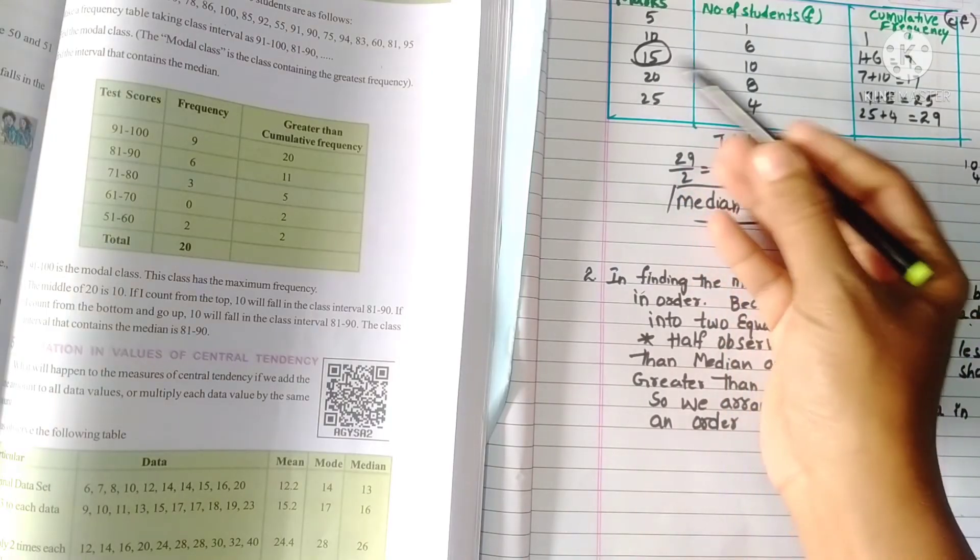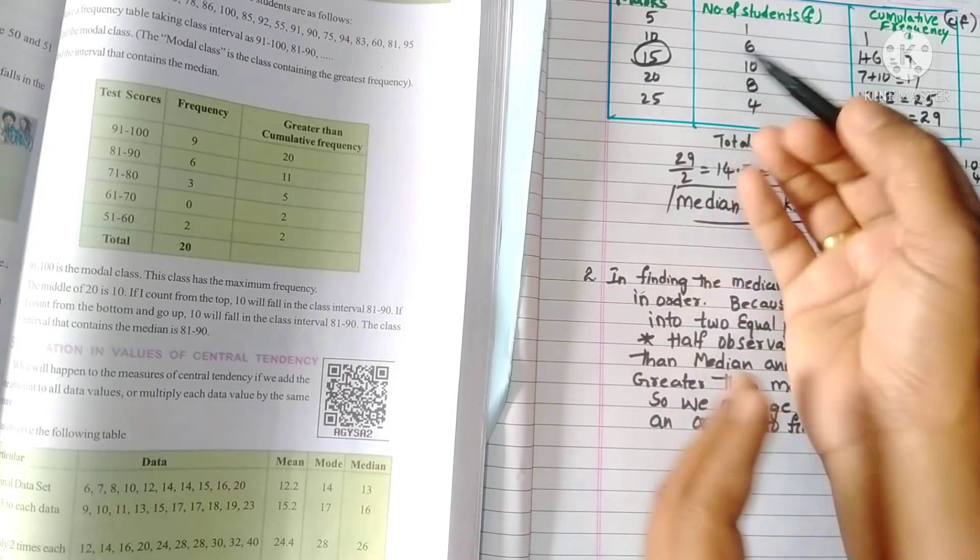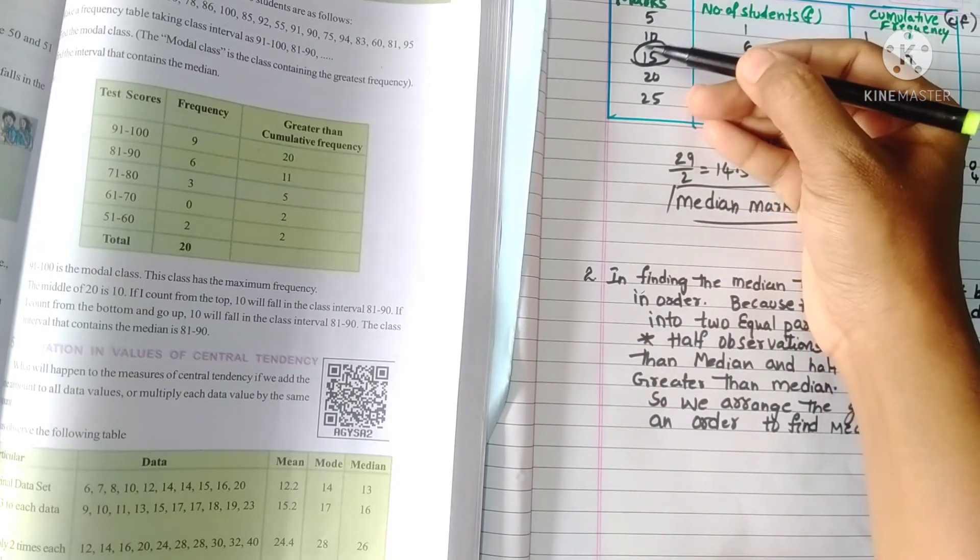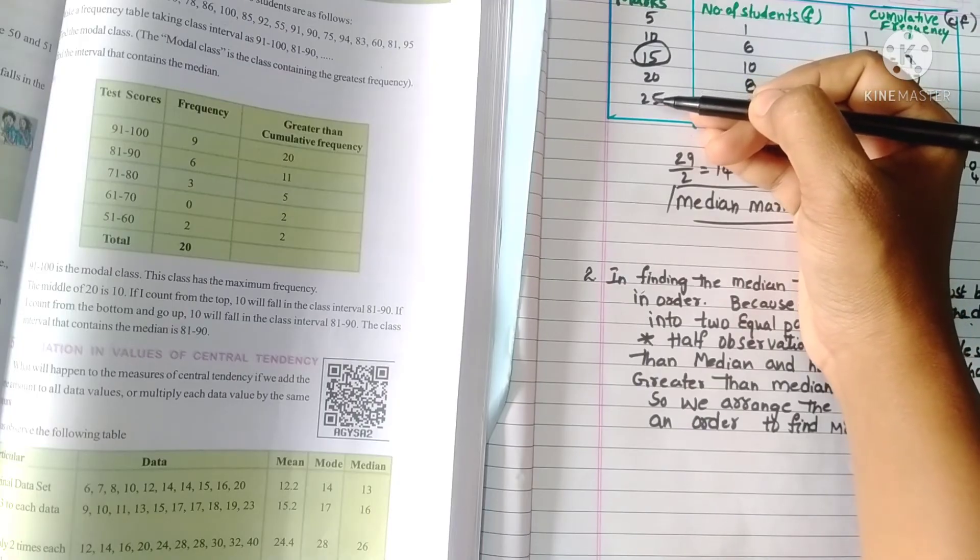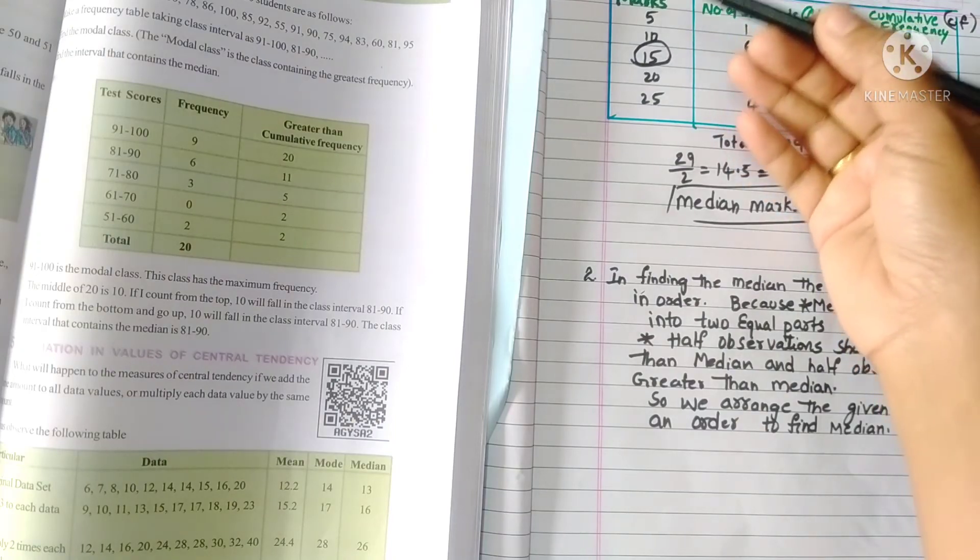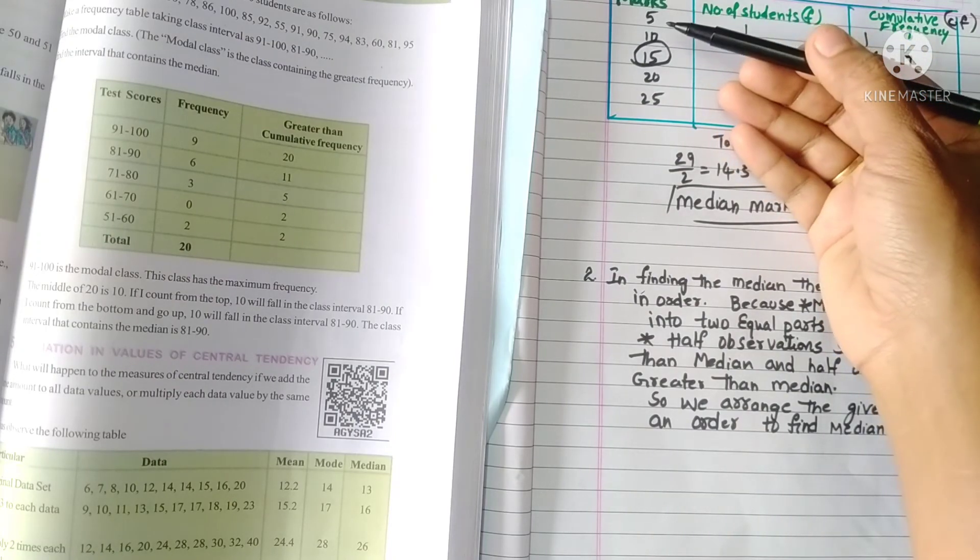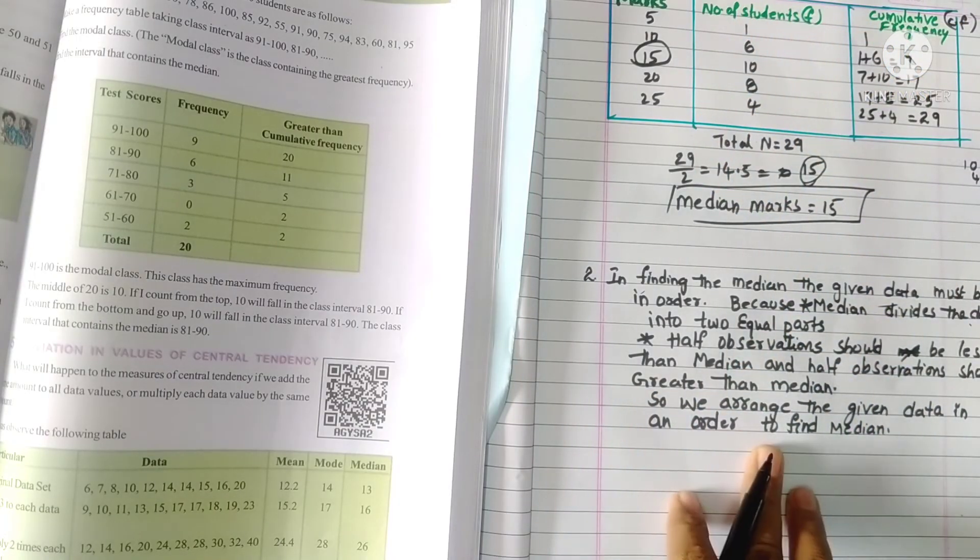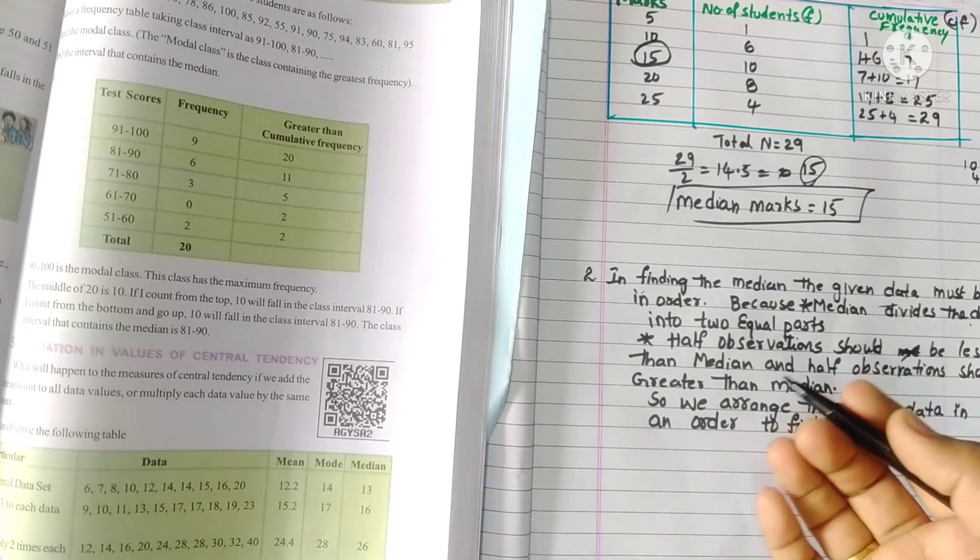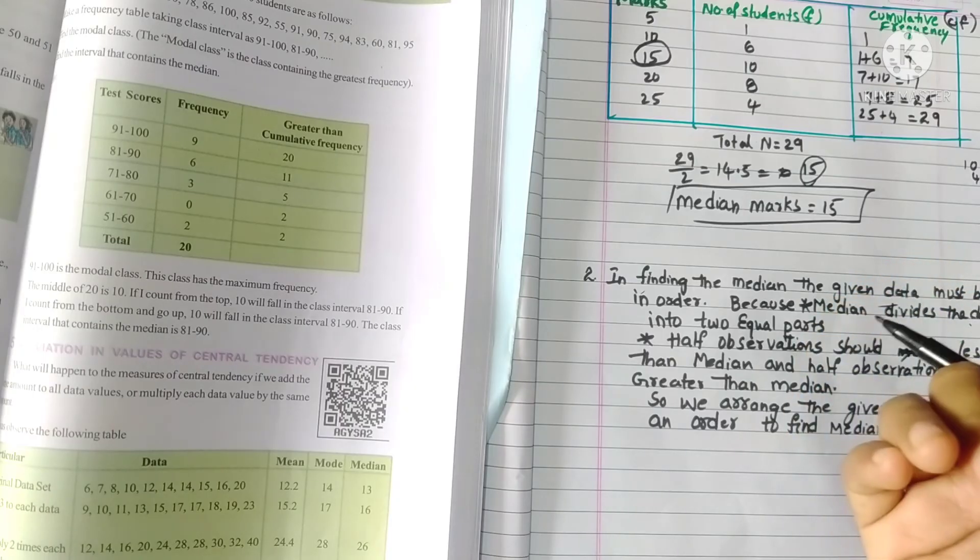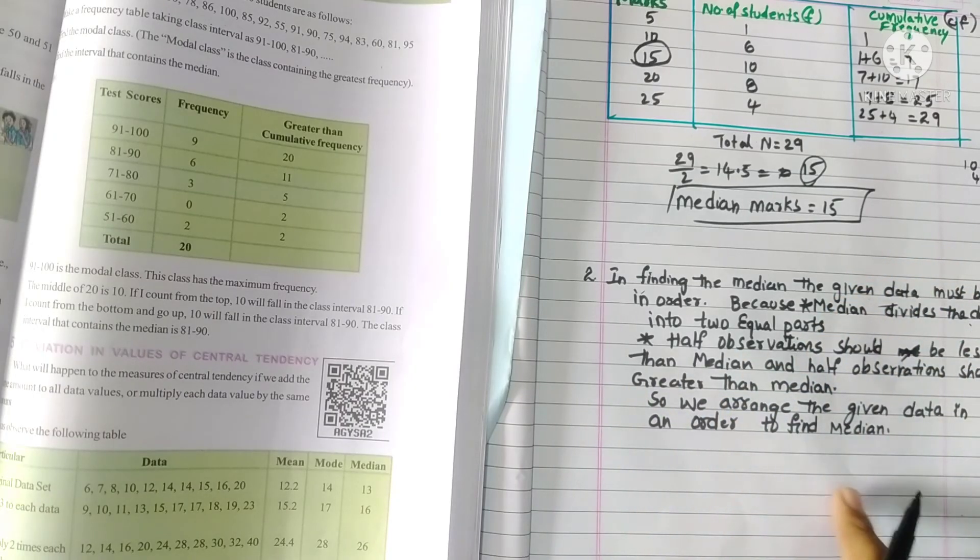See, here we calculated this is median. Median means what? It should be in the middle. Half of the observations should be less than and half of the observations should be greater than. So to keep it like that, we arrange the given data in order. After arranging in order only, now we came to conclude what is the lesser value and what is the greater value. That's why we arrange the data in order.